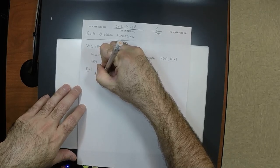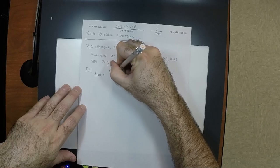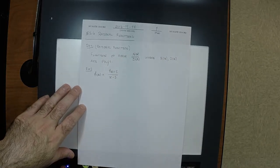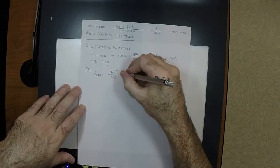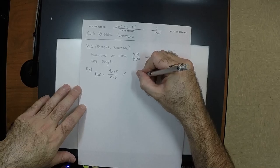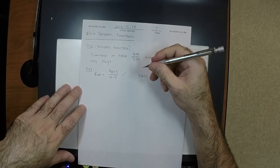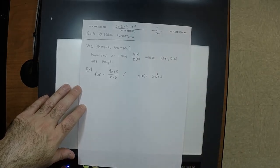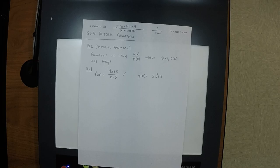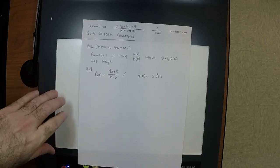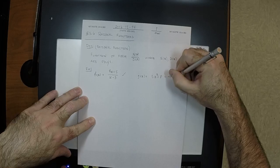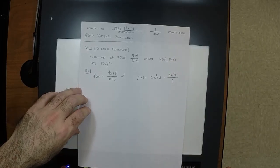Okay, so how about f of x equals 4x plus 5 divided by x minus 3 — is this a rational function? Yes, this is a rational function. How about g of x equals 5x squared plus 8? Yes, it is a rational function because you could write this as 5x squared plus 8 over 1, and 1 is a polynomial of degree zero — a constant polynomial.